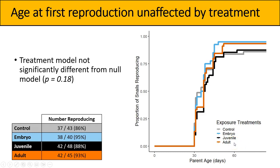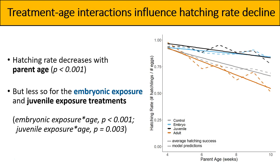This is where it gets interesting. When looking at hatching rate, we found treatment-by-age interactions influencing the hatching rate decline. We did see that hatching rate decreases with parent age, as expected, reflected in the generally negative slopes for all measurements in the graph. Dashed lines represent averages over the different parent ages, and solid lines represent predictions from the model.